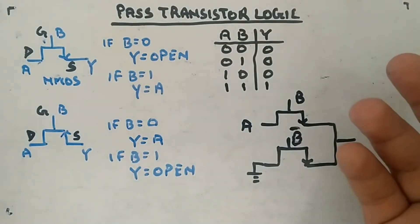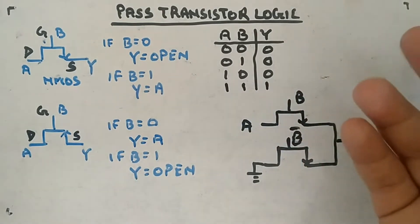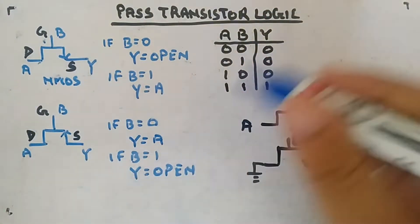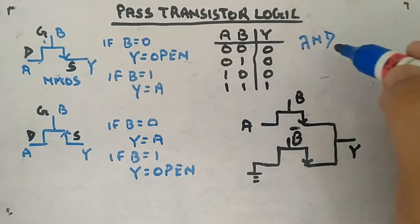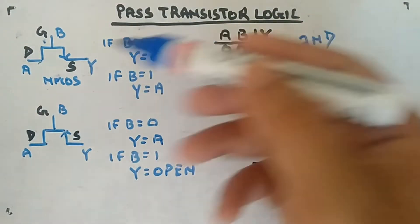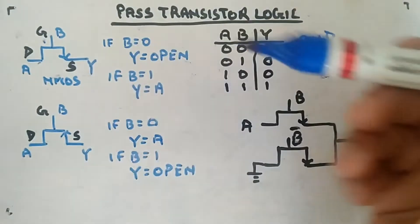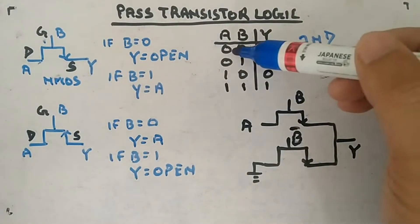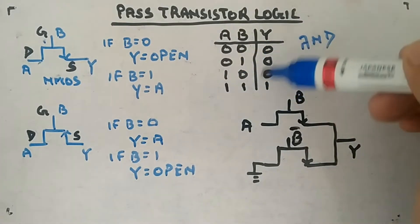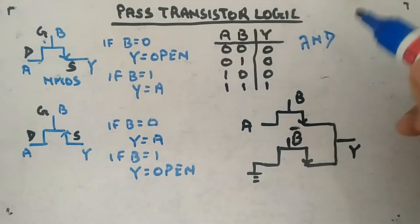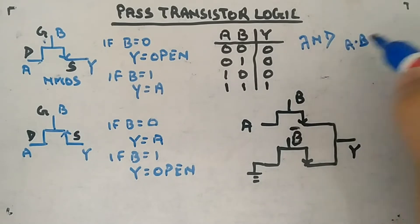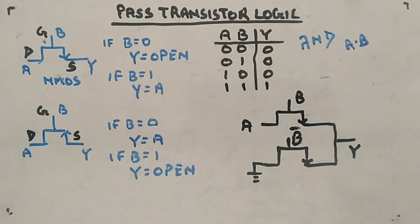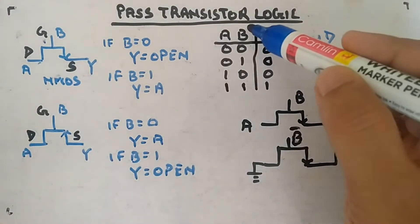You can use pass transistor logic to make any gate or logic function. Here is an example of an AND gate realized using only NMOS pass transistors. The truth table is: 0,0→0; 0,1→0; 1,0→0; 1,1→1. Only when both inputs are 1 is the output 1, which is A AND B.